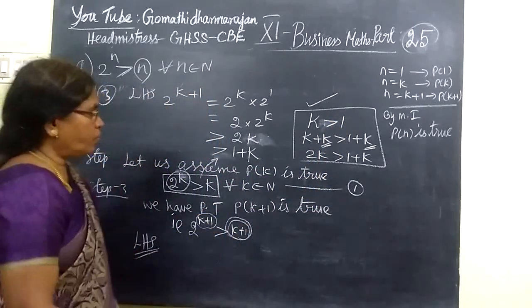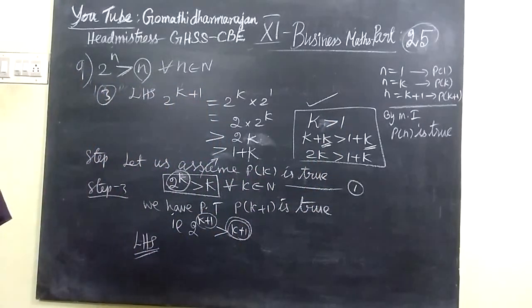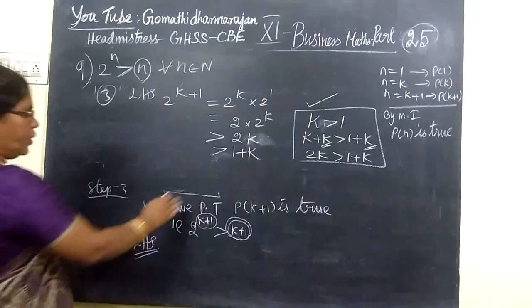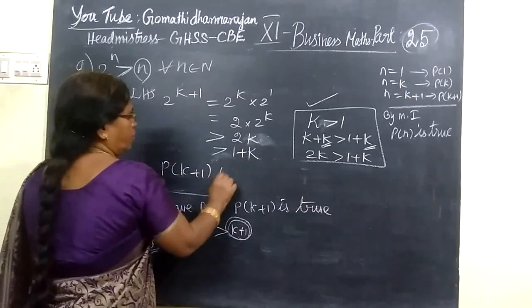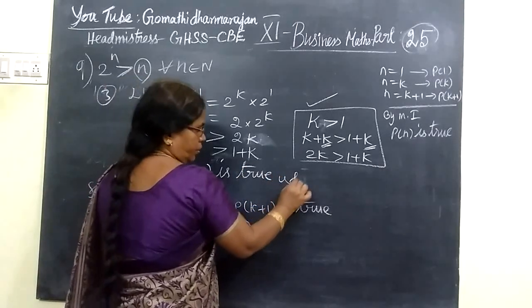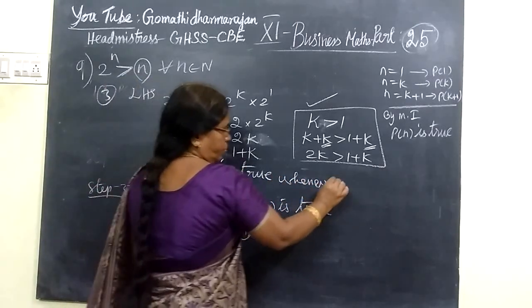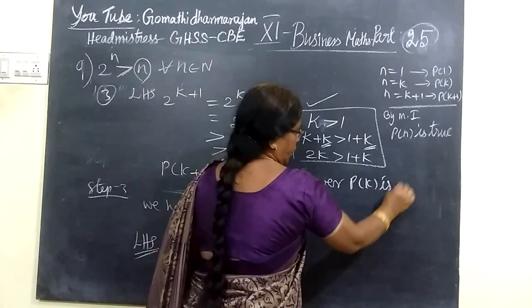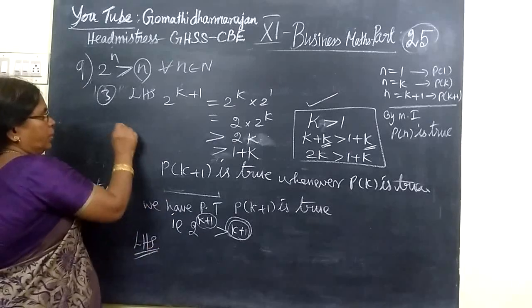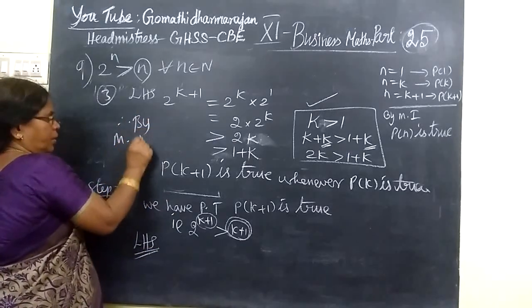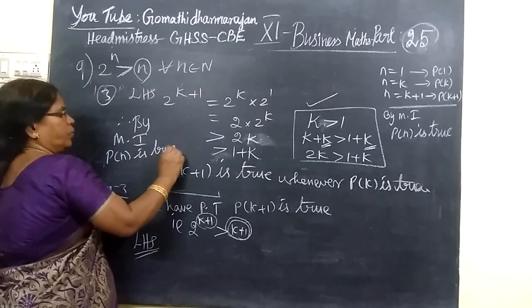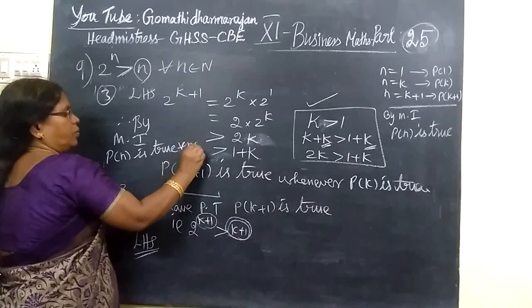So now P of K plus 1 is true. So you can immediately write P of K plus 1 is true. And this method, whenever P of K is true. So whenever P of K is true, therefore by mathematical induction, P of N is true for all N belongs to N.